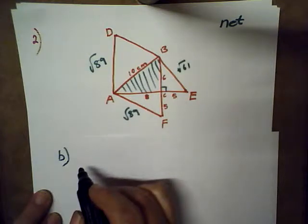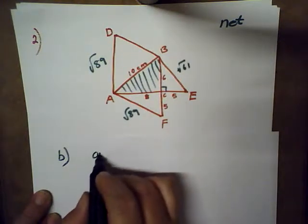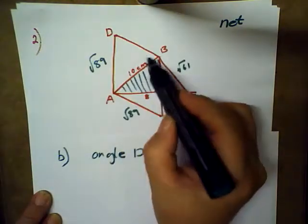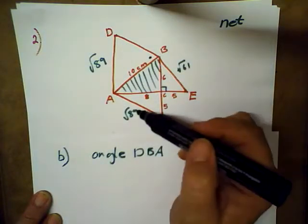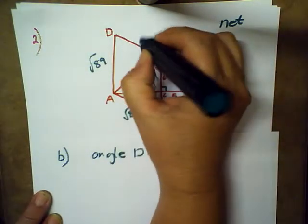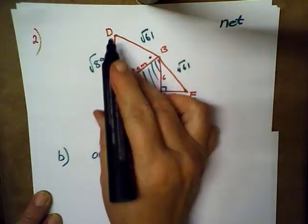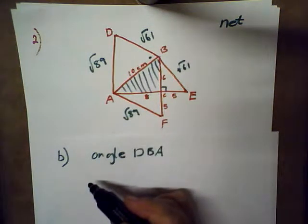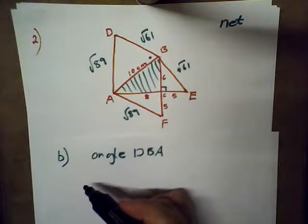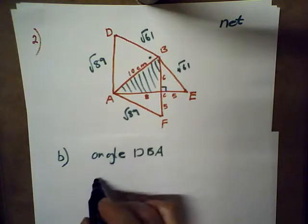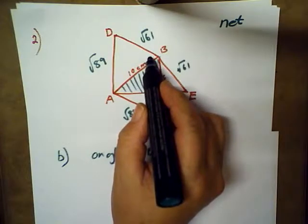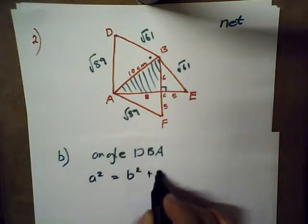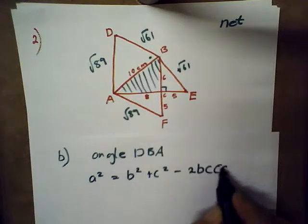The next one is B: calculate the size of angle DBA. We want the size of that angle. We know that this one would also be square root 61. We've got a triangle, we've got three sides of a triangle. So I can use the cosine rule because I don't have an angle, but I've got the three sides.